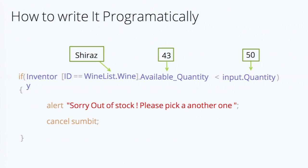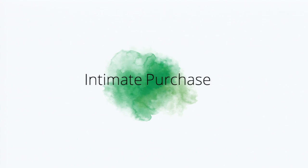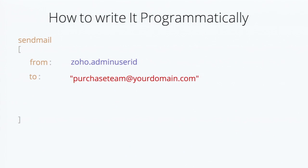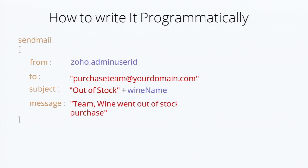Now we are done with the stock availability. Moving on, we have to intimate the purchase team to fulfill the order. To intimate the purchase team, we are going to send an email to the purchase team to fulfill the order. The send mail block is where you send an email — you mention your From email ID, the To ID to whom it has to be sent, the Subject, the wine name, and the message. Now we have intimated the purchase team to make the purchase.